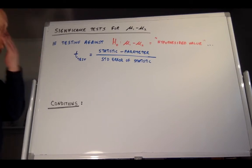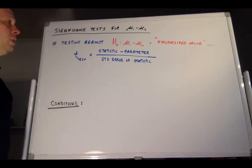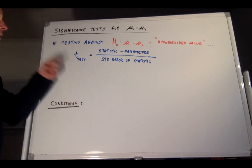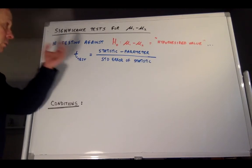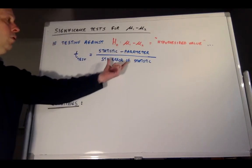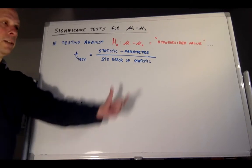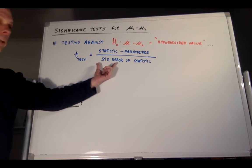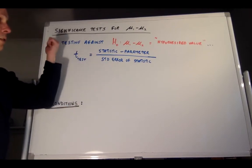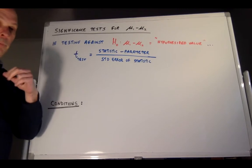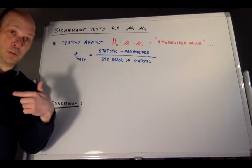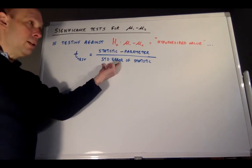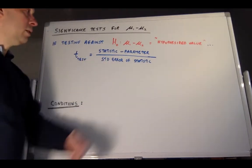If we're testing against a null hypothesis where mu1 minus mu2 is equal to some hypothesized value, then the t-test statistic, as always, is the statistic minus the parameter over the standard error of the statistic. We would use the standard deviation of the statistic if we could get it, but we usually can't because with two populations we almost certainly do not know the standard deviations of either population. That's why we use a t-test statistic and a standard error instead.